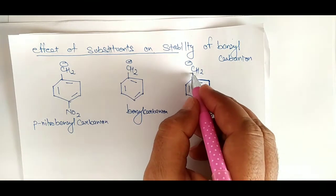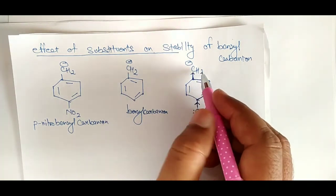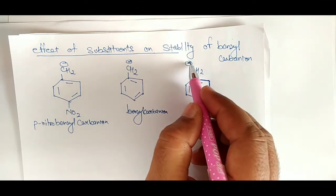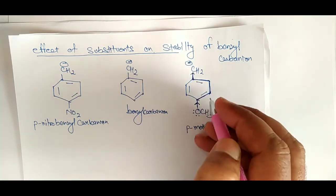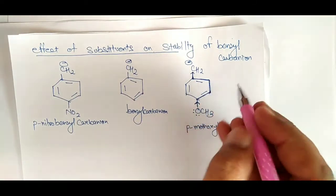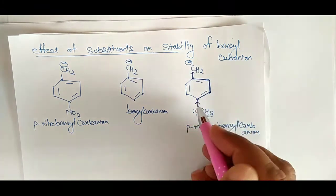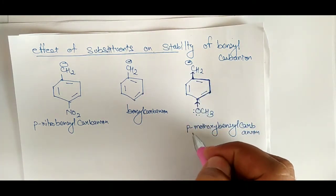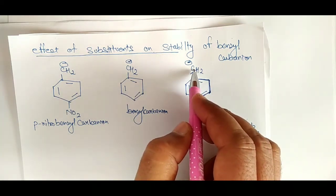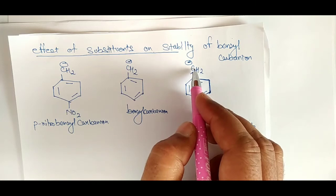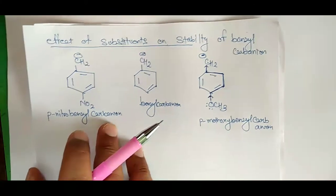Due to this increased electron density on the carbon, the intensity of the negative charge increases in the case of paramethoxybenzyl carbene, because there is an electron-donating group on this carbon. So if the electron density increases, it becomes more unstable.